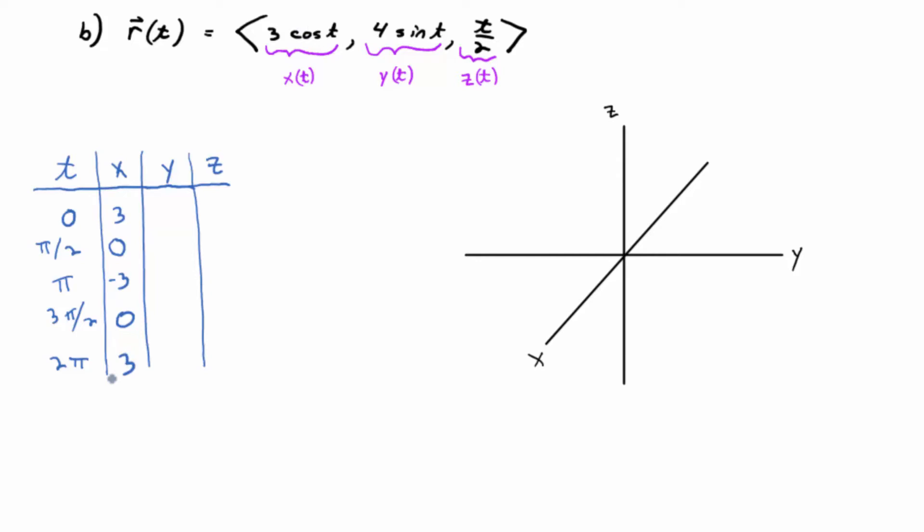So let's do our second components now, y of t. What happens if we plug in zero for t for four sine of t? Four sine of zero is zero. Sine of pi halves is one times four is four. What do we get for y of t if we plug in pi? Zero. What about three pi over two? The sine of three pi over two is negative one times four is negative four. What about two pi? Back to zero.